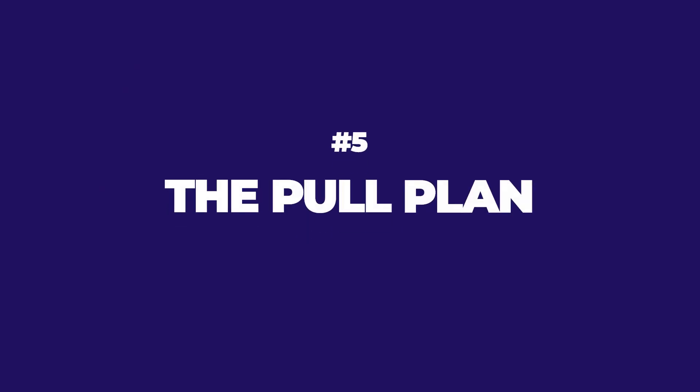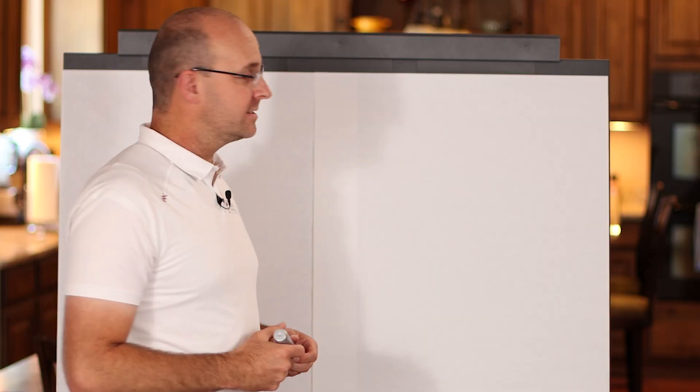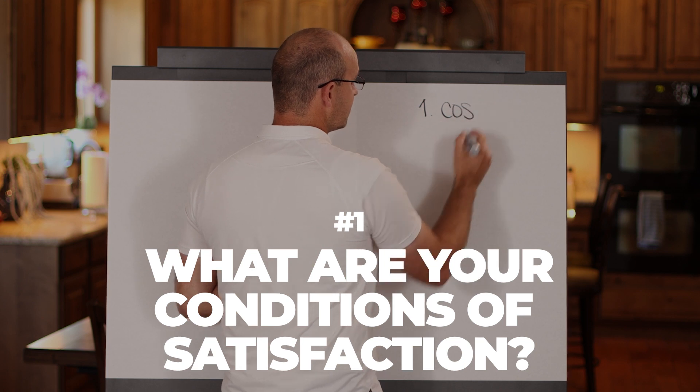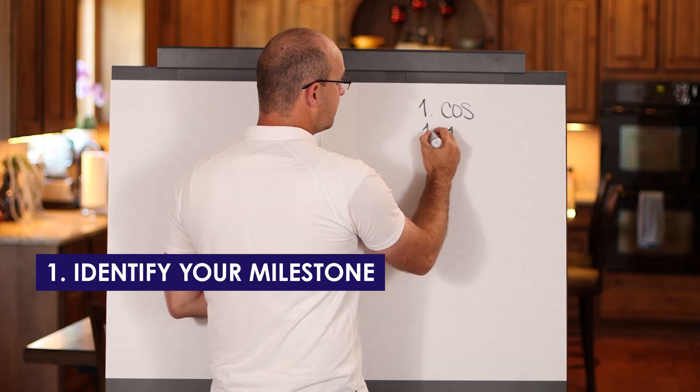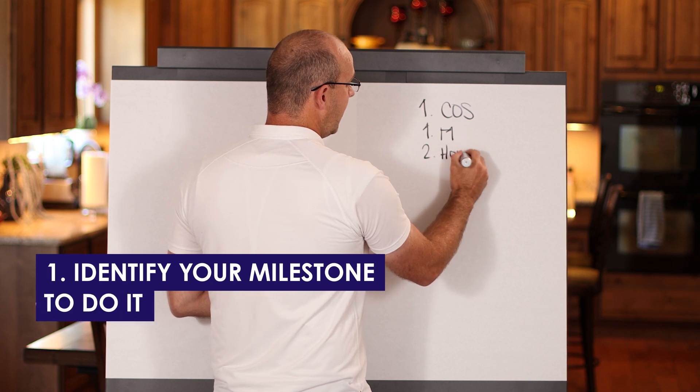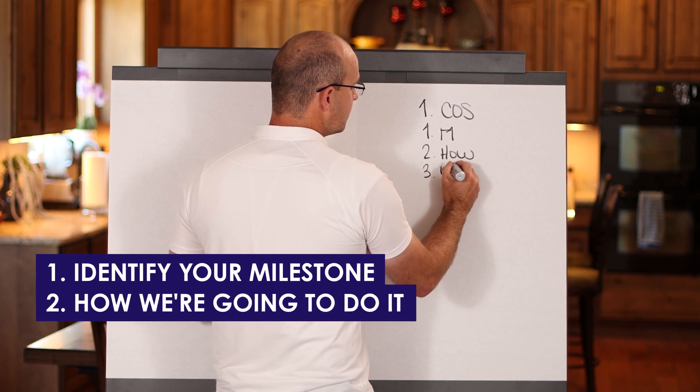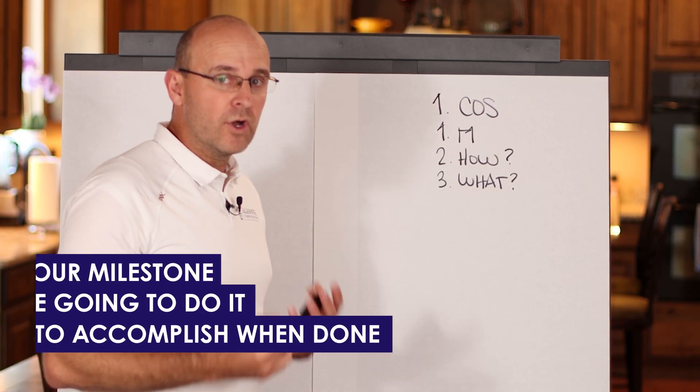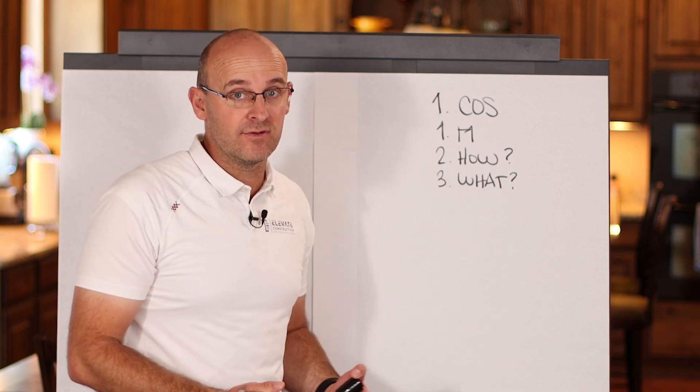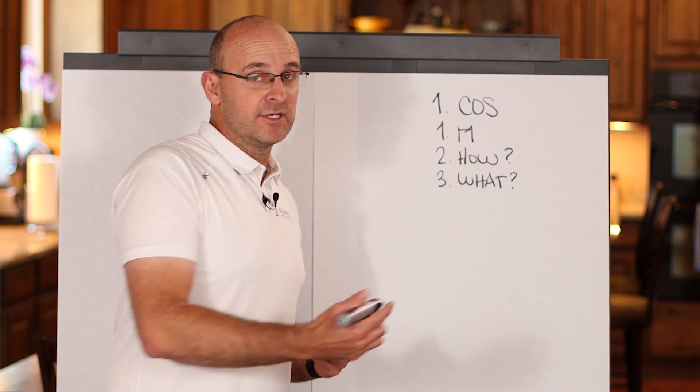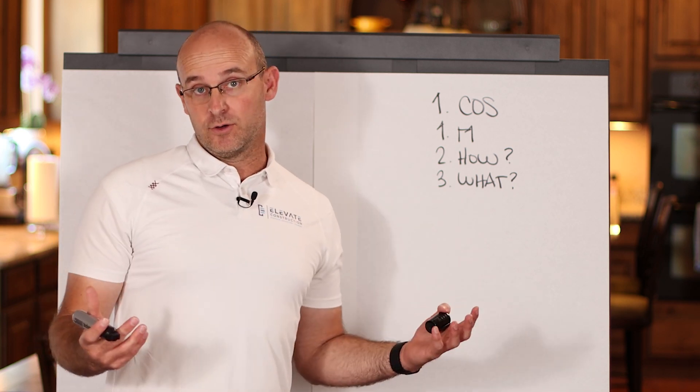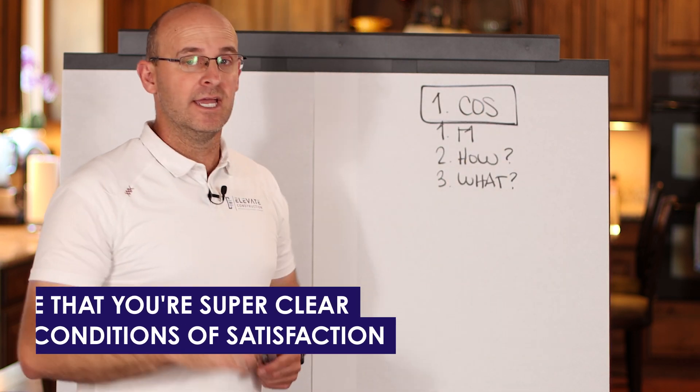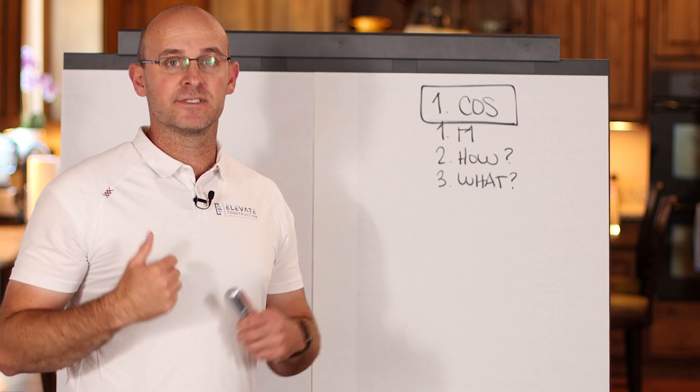Now step number five, when you go in and you do your pull plan, I highly recommend you follow these steps. Number one, you will say, what are your conditions of satisfaction? Meaning, this is the milestone that we're pulling to. Number two, this is how we're going to do it. Number three, this is what we want to accomplish when we are done. Really outline what are we doing here? Are we pulling this at a high level, low level, super detailed? Are we getting ready for commissioning, for rough-ins? Are there any owner requirements? Make sure that you're super clear about the conditions of satisfaction. Meaning, if we do these things, I, as the facilitator, will be satisfied.